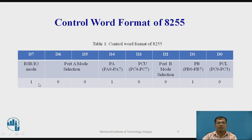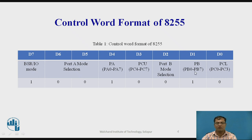D7 is the bit set/reset mode or IO mode. If it is 1, it will be in IO mode. Since we need to add the content of Port A and Port B, the D4 bit for Port A is set to 1, indicating input. Similarly, Port B is also set to 1 so that it acts as an input port. Port C — D3 and D0 bits — are set to 0 because it is an output port.